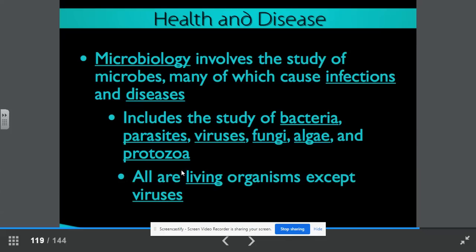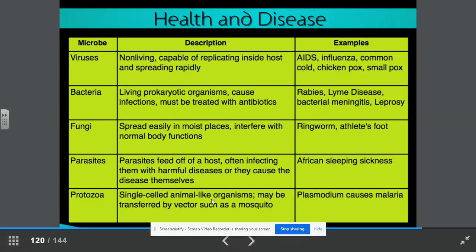So let's look at the microbe, the description, and some examples. First of all, we have viruses. These are non-living. They are capable of replicating inside the host and spreading rapidly. This would include AIDS, influenza, the common cold, chickenpox, smallpox, and of course, the coronavirus.